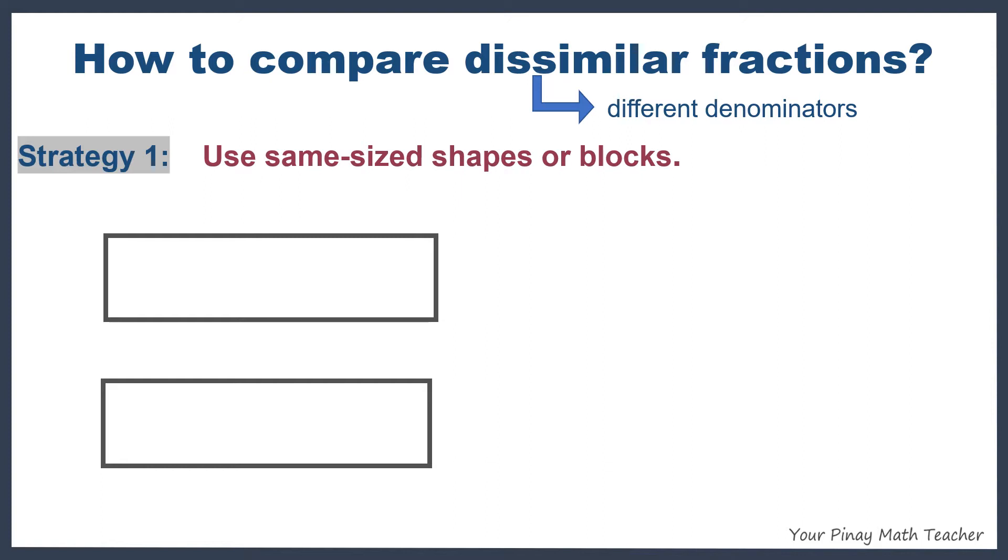For example, the first rectangle is divided into three equal parts and the second into two equal parts. Since they have different number of equal parts, then all the fractions that we can generate from these two figures are dissimilar fractions. If I were to shade one out of three in the first figure and one out of two in the second, then we have a fraction for the shaded part for the first figure, one-third,